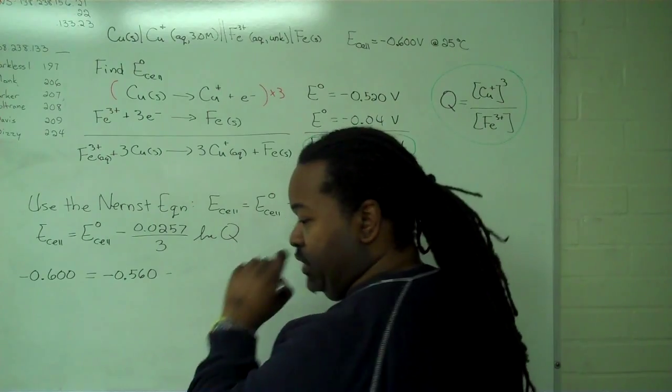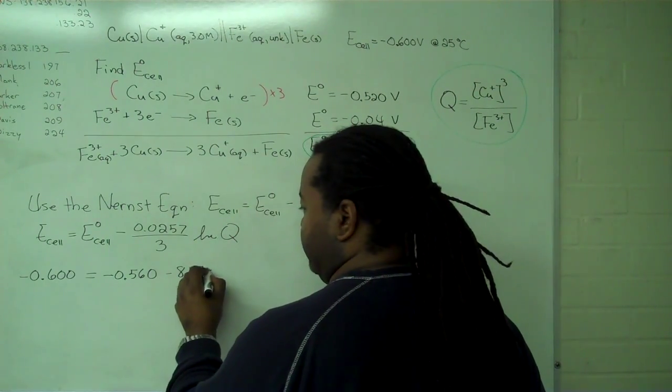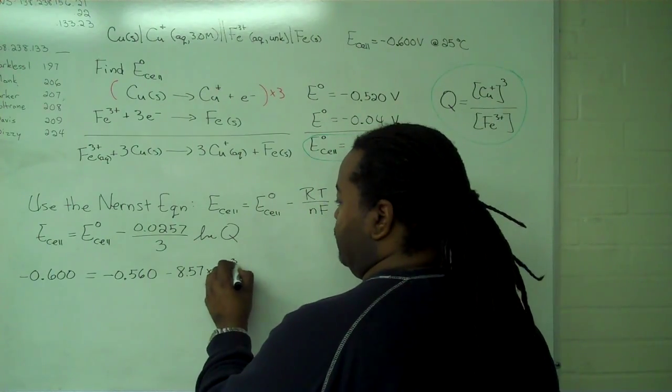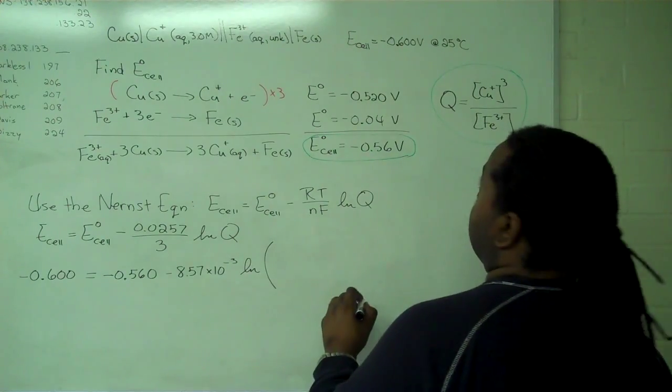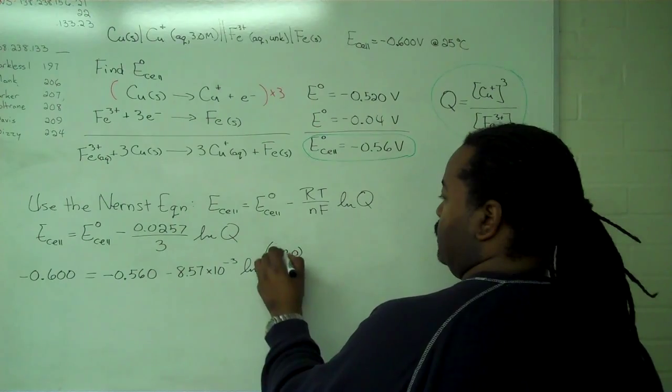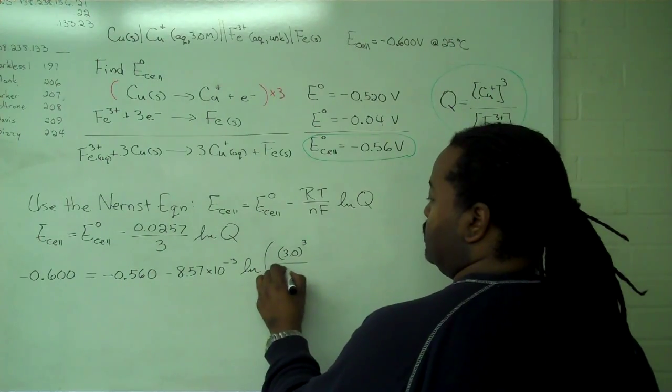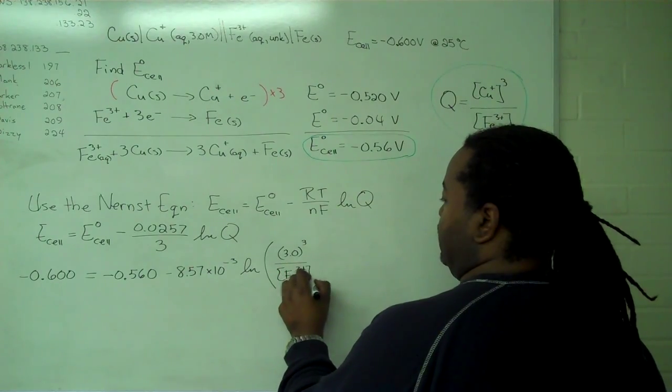And we get negative 8.57 times 10 to the negative 3. And now for Q, copper's concentration is 3 molar. That is cubed, and our unknown concentration of iron 3 plus.